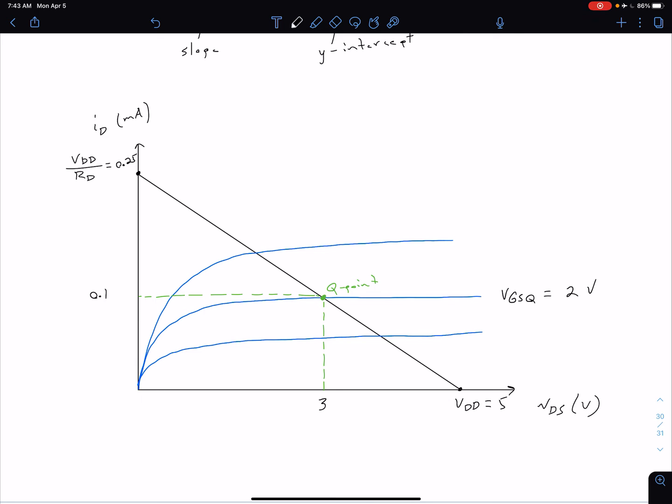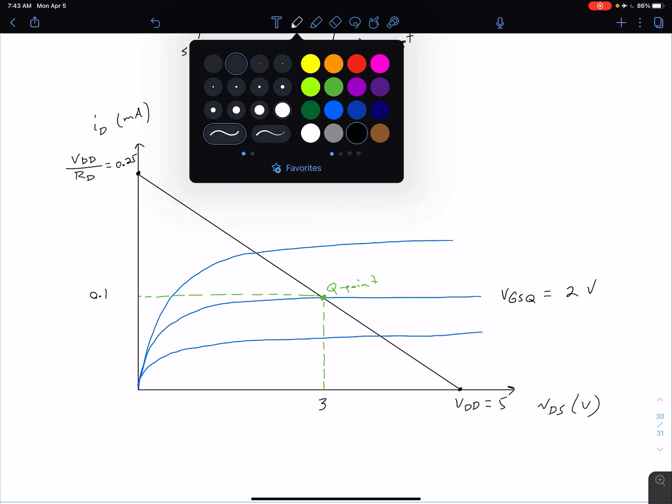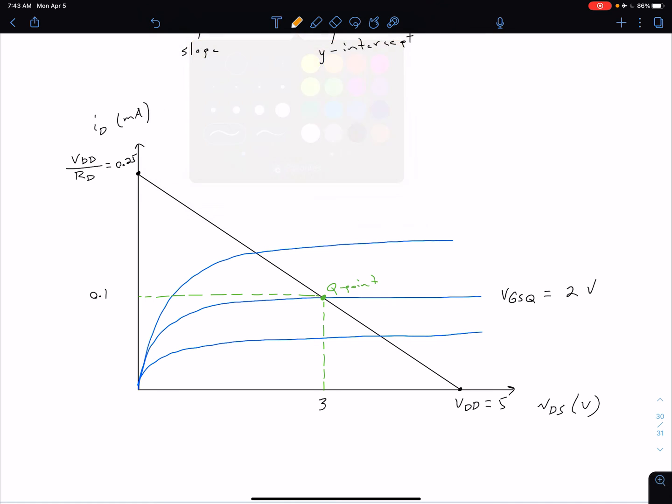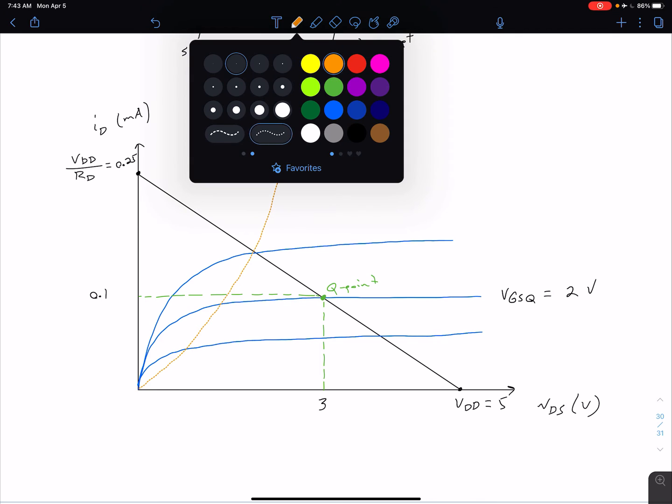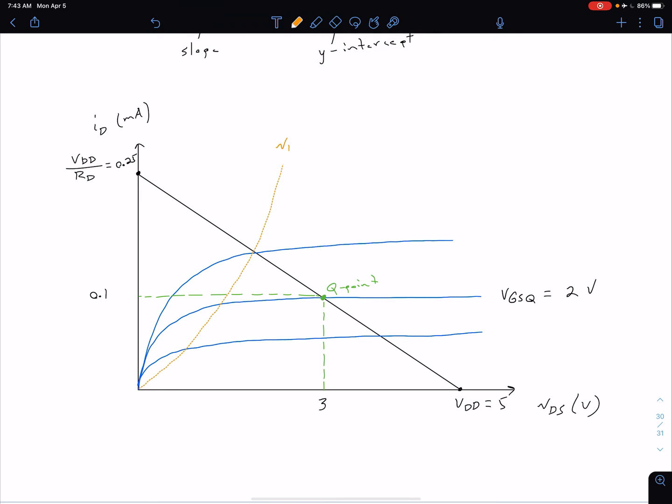There's a couple of other things that we can note in this load line relative to this curve here. Remember, we're also going to have some curve that corresponds to our VDS sat. Let's make that a dashed line in orange. Let's have some curve here that maybe looks something like this. This is going to correspond to our VDS sat. Again, I've not drawn this super accurately, but what we would see is that this would be our VDS sat for this particular VGS curve. We saw that that corresponded to our VGS, which was 2 minus VTN, which gave us a value of about 1 volt.